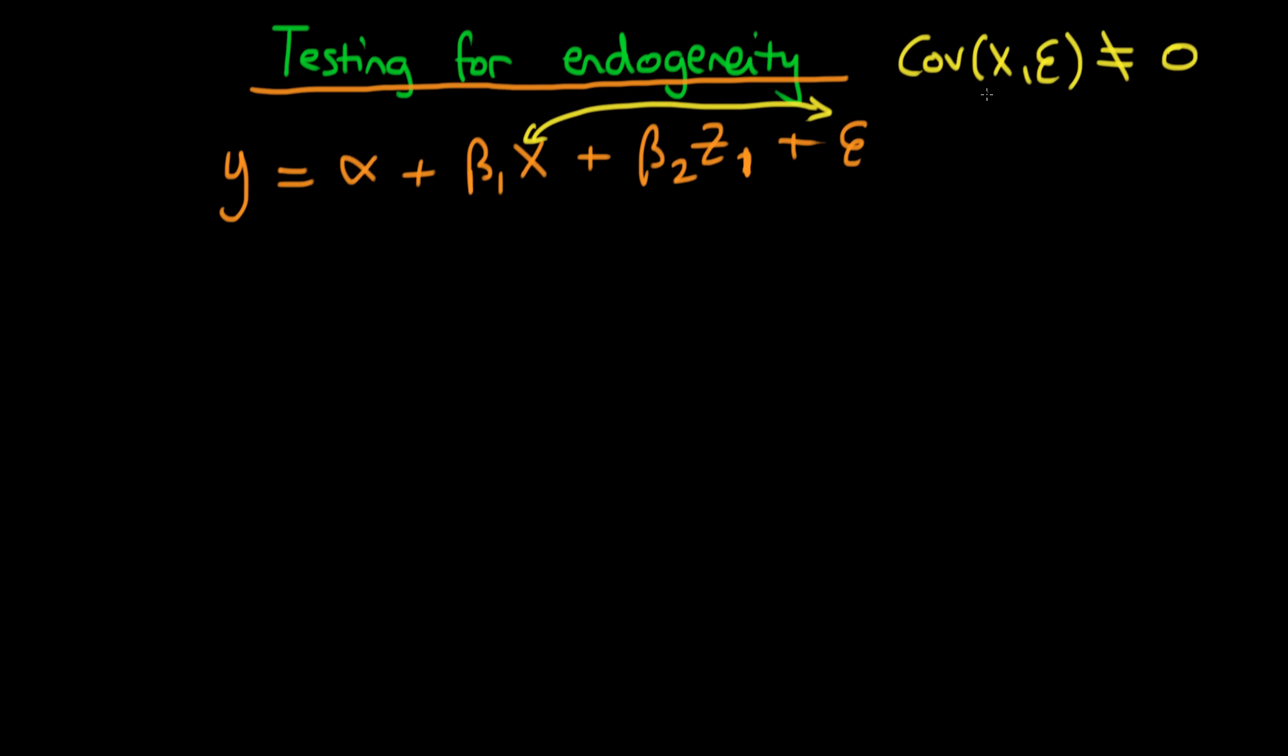So you might think a way we could go about testing for whether or not x is endogenous might be to say, well, what's the covariance between x and epsilon? And is it the case that it doesn't equal zero?